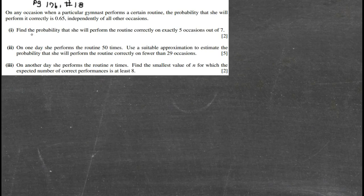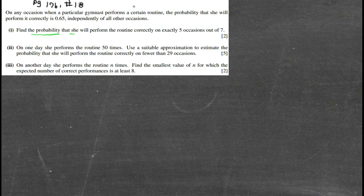Okay, here we are on page 176, number 18, to find the probability. All right, so we have a gymnast performing a certain routine. The probability that she'll perform it correctly is 0.65, independently of all other occasions.